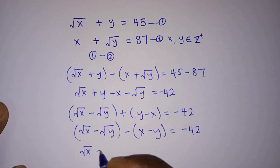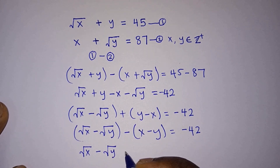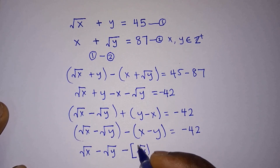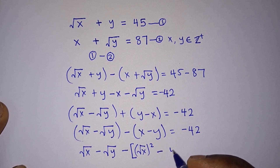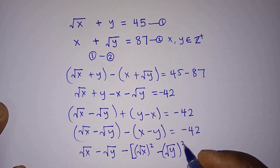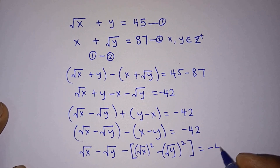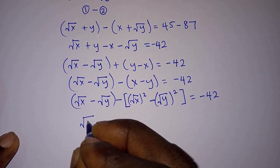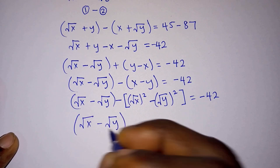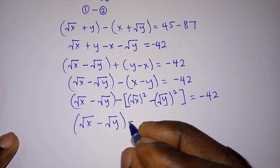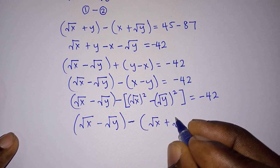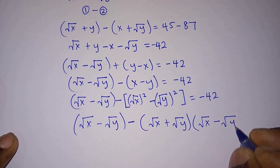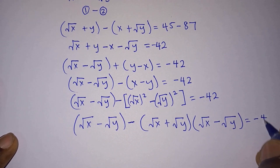We can rewrite x as (√x)² and y as (√y)². So we have square root of x minus square root of y, minus [(√x)² minus (√y)²], equal to negative 42. The expression (√x)² minus (√y)² is a difference of two squares, so we factor it as (√x plus √y)(√x minus √y), giving us square root of x minus square root of y, minus (√x + √y)(√x − √y), equal to negative 42.